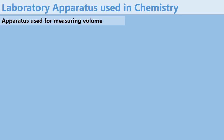Laboratory apparatus used for measuring volume. The first category of apparatus are used to measure volume, and these include the following.